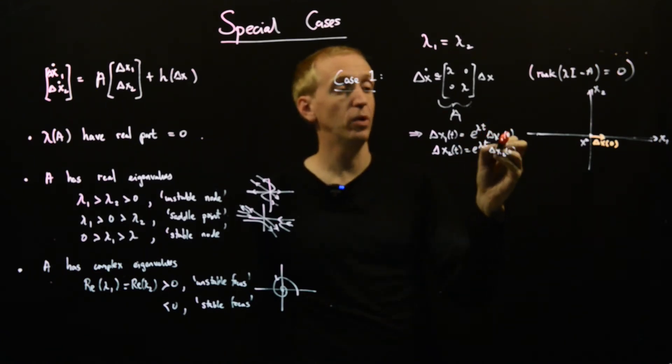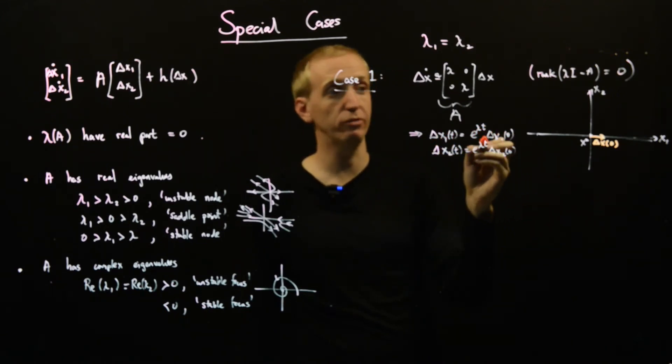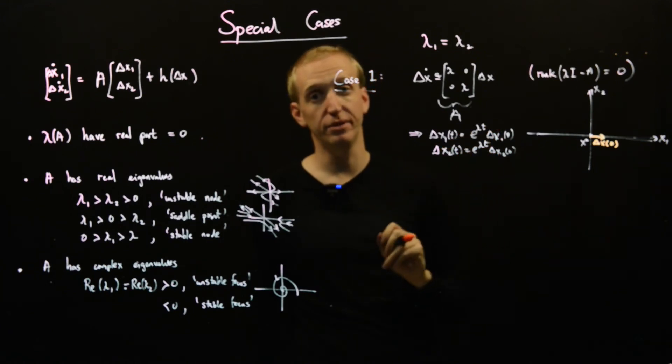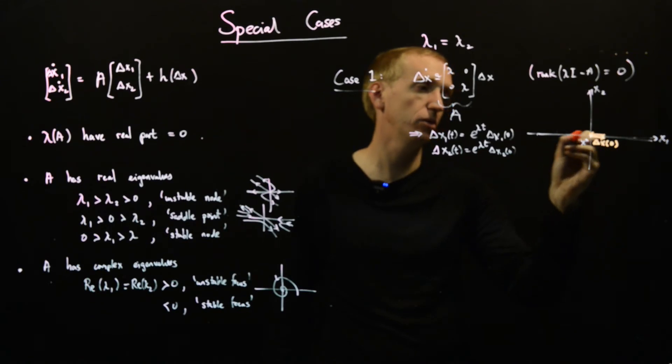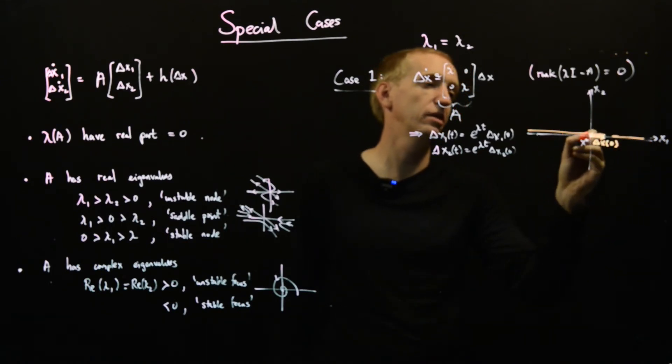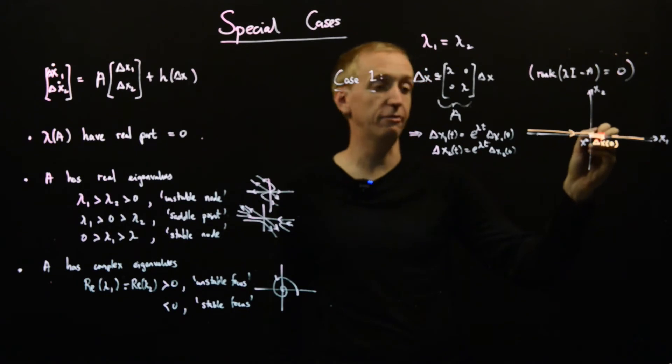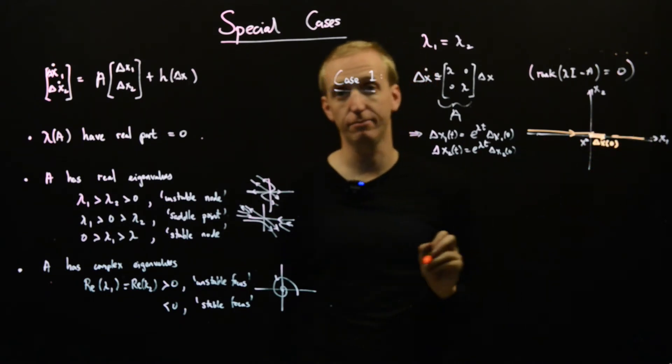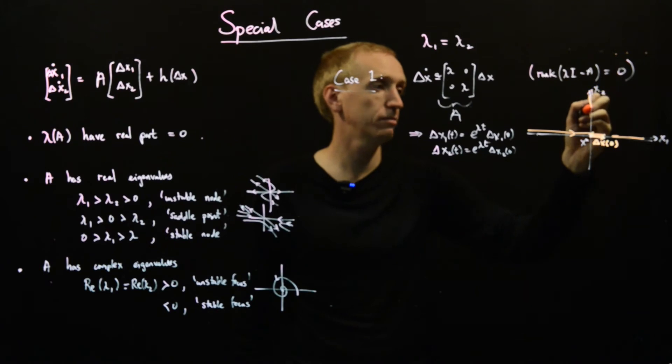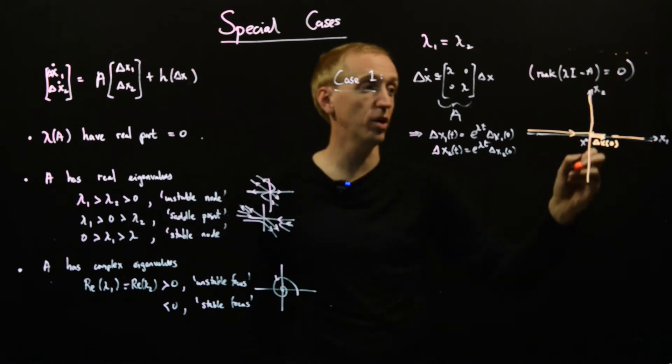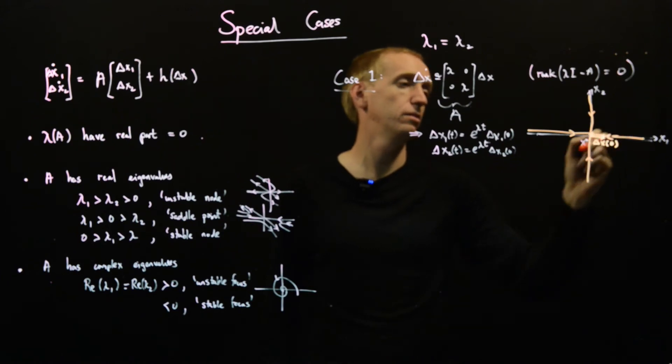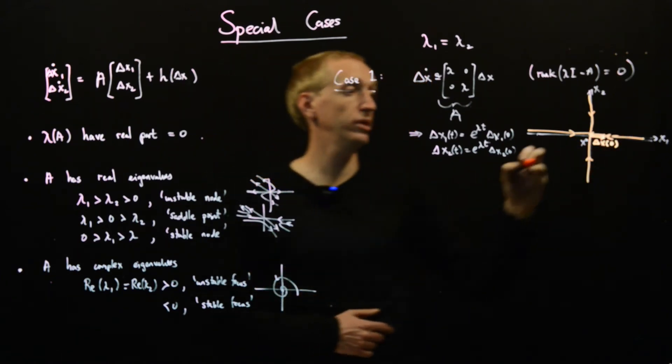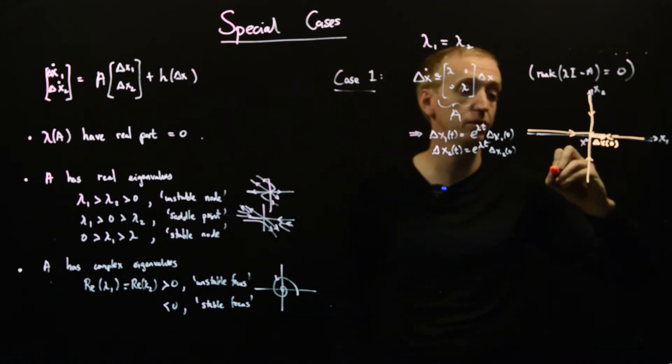So what happens? Well, the change in x1 will be given by e to the lambda t times wherever we started. So if lambda is negative, our solutions will tend in along this eigenvector and similarly over here. And if lambda is positive, they'll go the other way. And the same thing happens for the other eigenvector, which is in the 0, 1 direction. It'll either be in or out. And everything in between is just a linear combination of these two things.